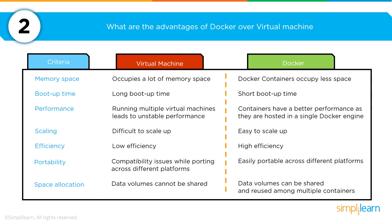You'll also be asked to provide the advantages of Docker over virtual machines — this comes up very consistently. You may want to extend it to cover differences between a dedicated machine, a virtual machine, and a Docker environment. The arguments for Docker are fantastic: Docker containers occupy significantly less space than a virtual machine or dedicated machine, boot-up time is significantly faster, containers have much better performance as they are hosted in a single Docker image, Docker is highly efficient and very easy to scale particularly with Kubernetes, and it is easily portable across multiple platforms.